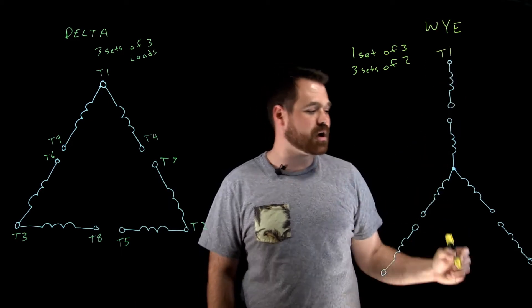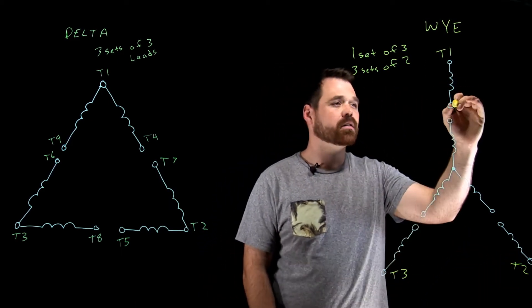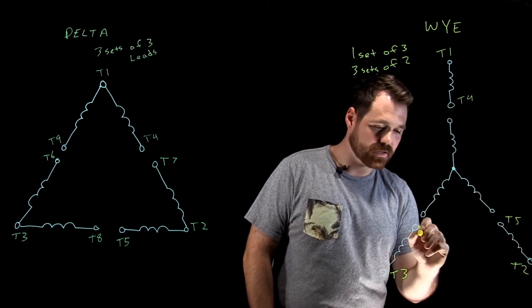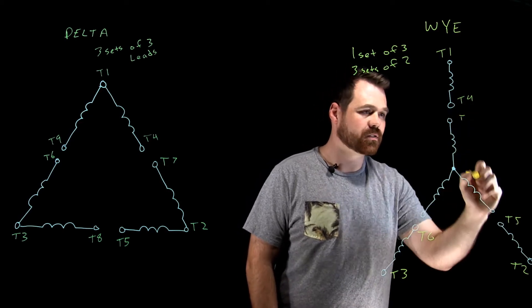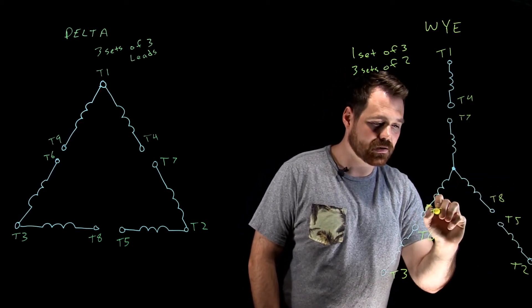Now in terms of terminal identification, again, we start with T1 at the top, T2, T3, T4, T5, T6, T7, T8, and T9.